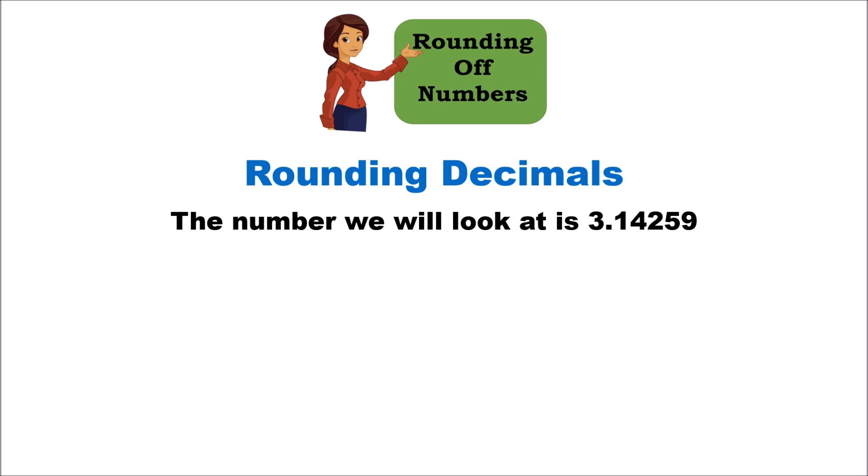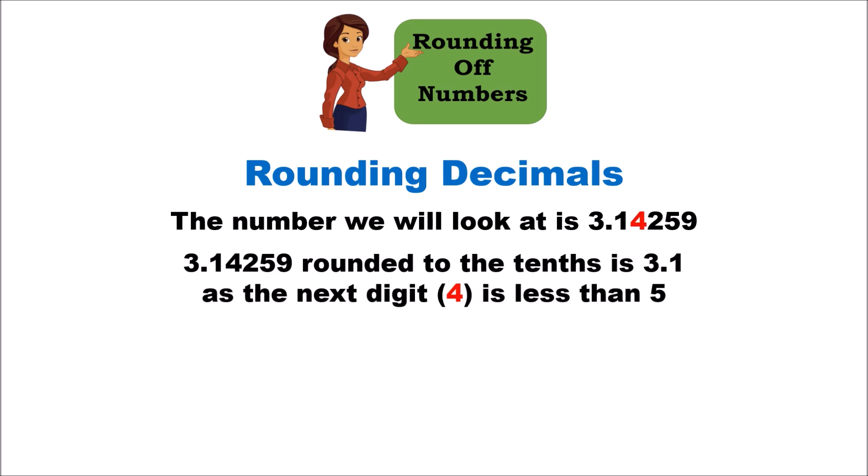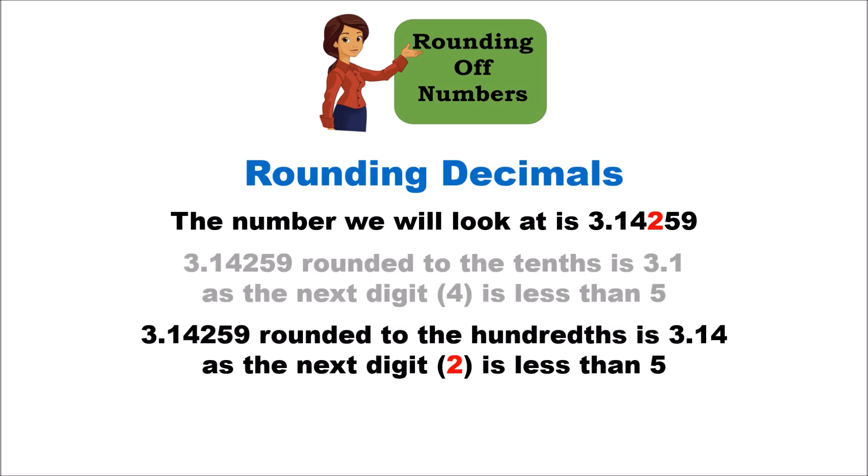Let's use the number 3.14259 — the value of pi. When 3.14259 is rounded to the tenths, the answer is 3.1, because the next digit to the right is 4, which is less than five. If we round to the nearest hundredths, the answer is 3.14, because we keep two digits after the decimal and the next digit over is 2, which is again less than five.